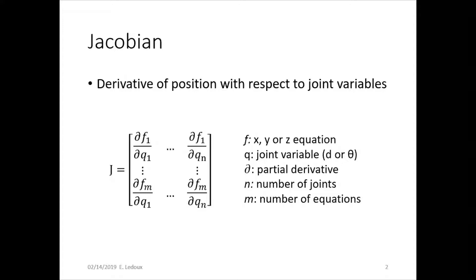Generally, m is never going to be greater than 6, but n could be greater than 6 if there are more joints. We just can't have more degrees of freedom than 3D space for the end effector.